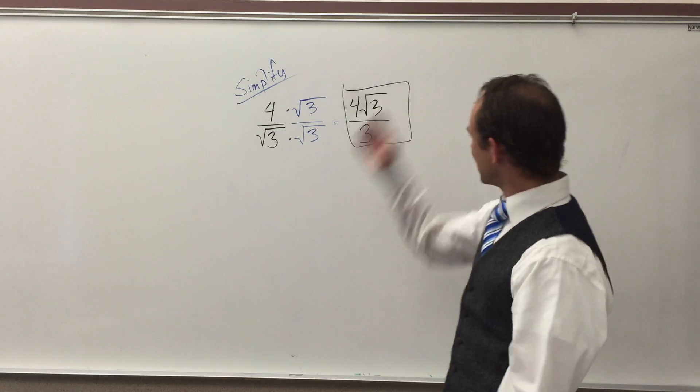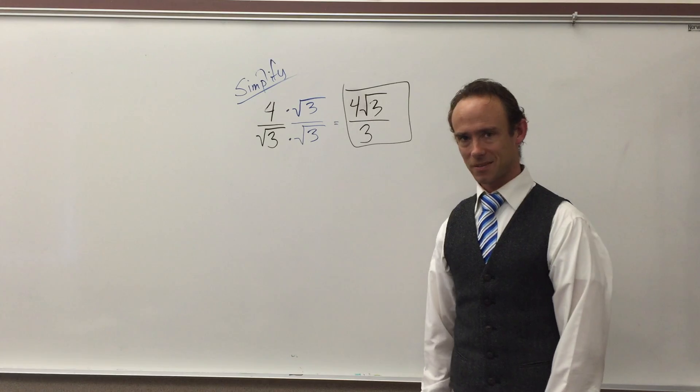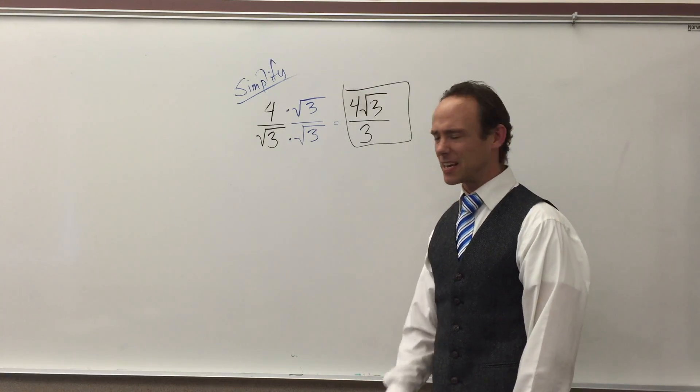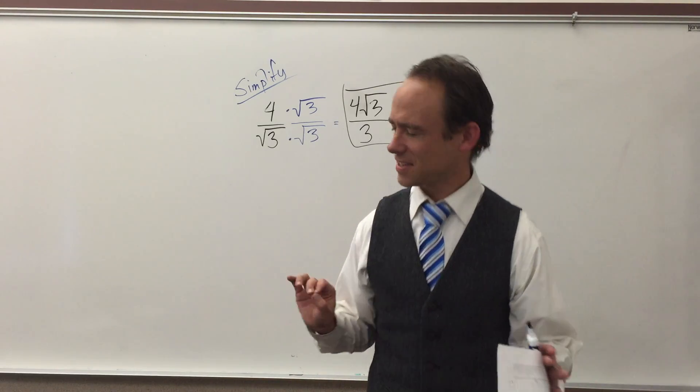And you ask yourself, Mr. Miller, why is this one more simplified than that one? And I will tell you, because in this one, that radical sign is in the numerator, and that's all good. This one is in the denominator. We ain't having it.